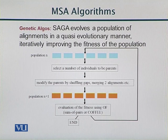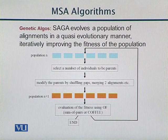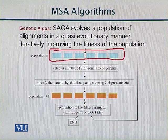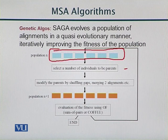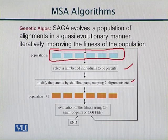SAGA uses a quasi-evolutionary manner in which we have a population of n sequences. We then select a number of individuals as parents, converting the population into a hierarchical structure with parent-child relationships. We modify the parents by shuffling gaps or merging different alignments together, resulting in a final population of n+1 size containing the aligned sequences.